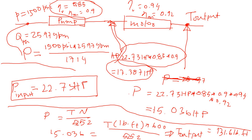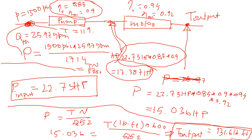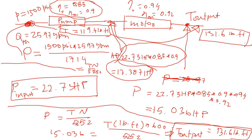One interesting thing to note: the torque output is 131.6 lb·ft. If you calculate the torque input at the pump using the same equation T × N / 5252, I found that the input torque is 119.4 pound-feet. So the output torque of 131.6 lb·ft is greater than the input torque of 119.4 lb·ft — this is torque multiplication, the exact same thing that happens in an automatic transmission torque converter.